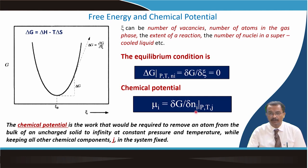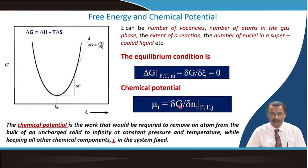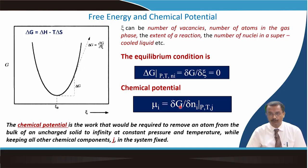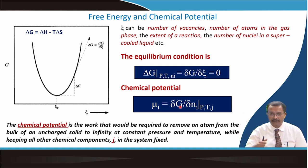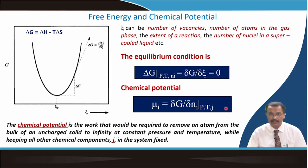Physically, the chemical potential is the work required to remove one mole of species i from the bulk of an uncharged solid to infinity at constant pressure and temperature, while keeping all other chemical components J in the system fixed. The standard chemical potential μᵢ comprises two parts: the value at standard state plus RT ln(activity). Activity is defined as γᵢ · xᵢ, where γᵢ is the activity coefficient and xᵢ is the mole fraction.